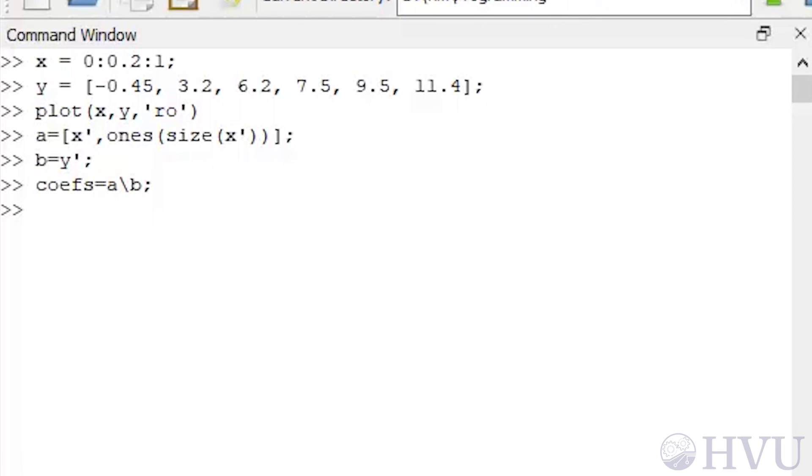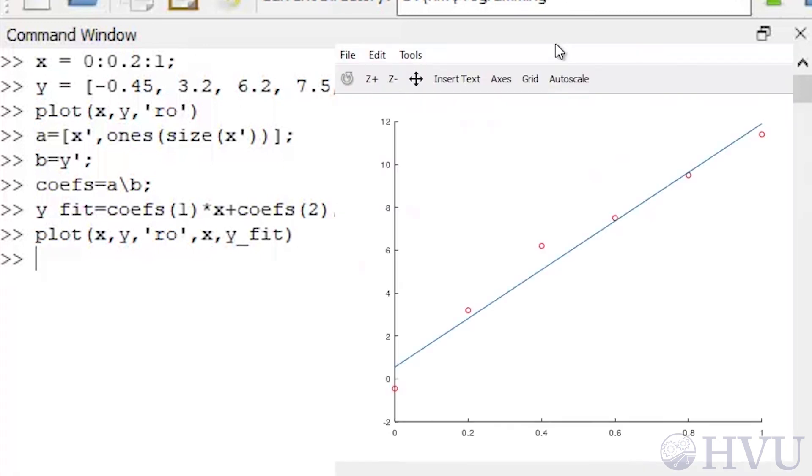The last step will be to plot the line and the data together to make sure that my results make sense. The Y values of the line at the same X points of my data can be created with Y underscore fit, which will contain my curve fit, equals COFS of 1, the slope, times X plus COFS of 2, which is the Y intercept. To plot the line, type plot X comma Y comma RO X comma Y underscore fit. That results in a straight line, which seems to approximate the behavior of the data fairly well.